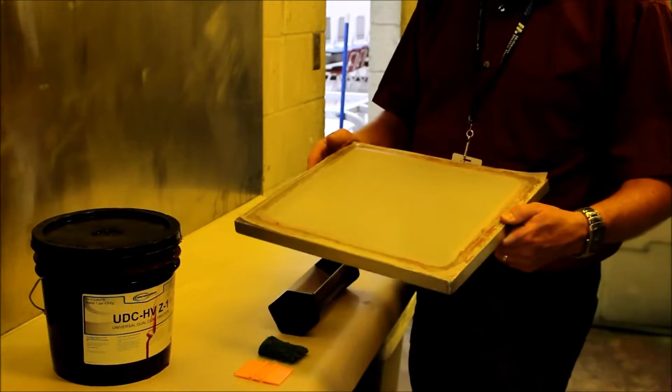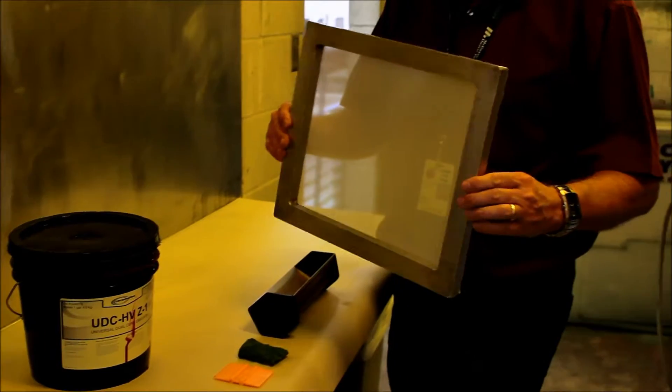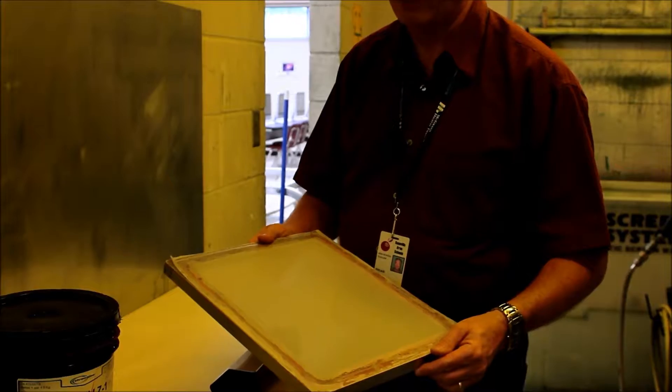Direct emulsion is a stencil system that will create a light sensitive coating on your screen that we can take in the next screen printing process to create a stencil for screen printing.